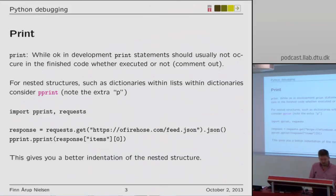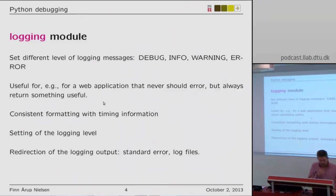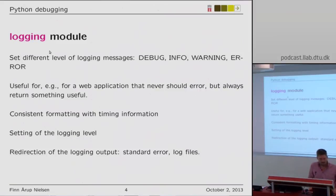The pprint function gives you somewhat nicer formatting of the variable you're displaying. This works well for nested structures — dictionaries of arrays of dictionaries — so they produce a nice indentation. But instead of these print statements in a finished program, you should consider the logging module of Python.